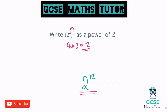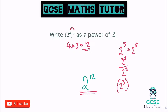So we've got three little rules there. We had something like two to the power of three times two to the power of five — in this scenario, you can add the powers. Something like two to the power of five divided by two to the power of three — in this case, you can subtract the powers. And if we have something like two cubed all to the power of five — in this case, you can multiply the powers.